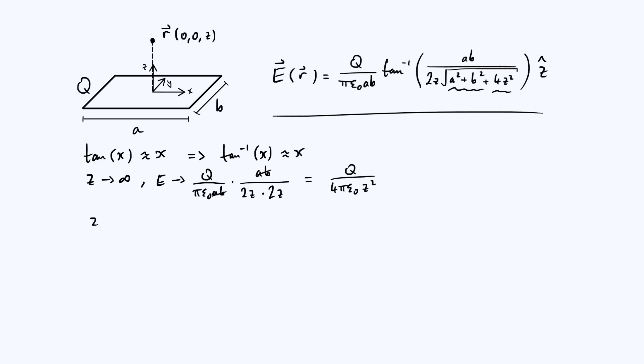The second limiting case I want to consider is predictably what happens when z goes to 0. So when z goes to 0, what happens to the magnitude of the electric field? Well you've still got your pre-factor q over pi epsilon 0 ab. When z goes to 0, the denominator of the argument of the arctan function goes to 0 as well, because there is this z here, and therefore your argument is going off to infinity.